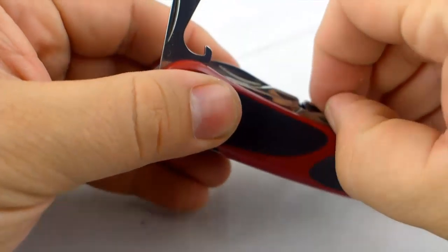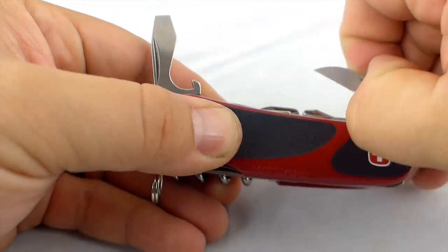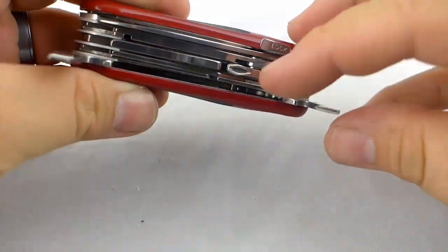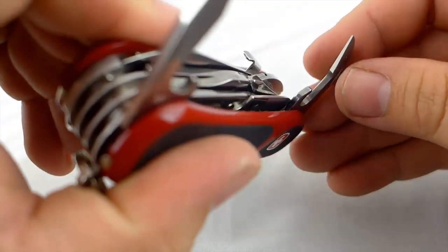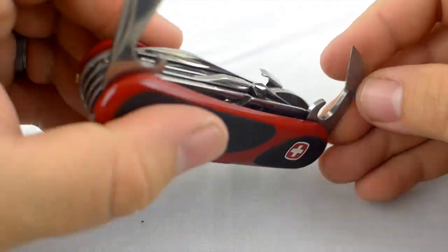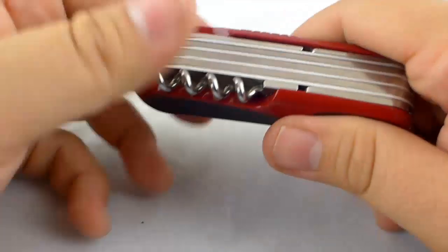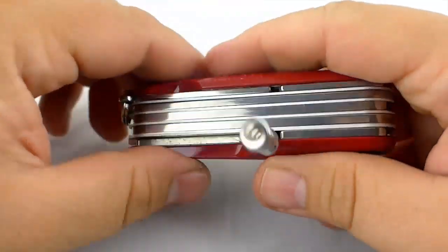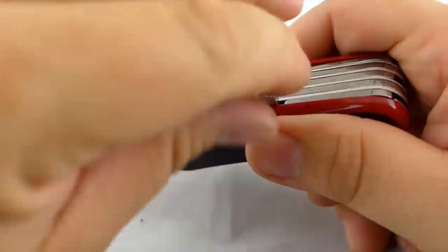And then last you have your bottle opener and your can opener. This can opener has a pretty decently sharp blade edge on it. And then on the bottom you've got a corkscrew. And then an awl.